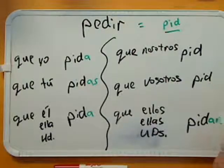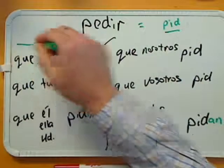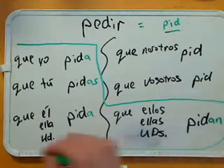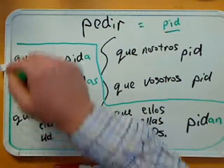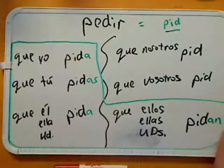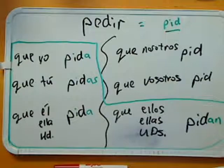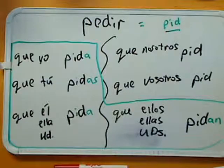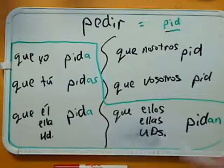If you encase those four forms, it does look like a boot — there's your boot. This is a boot verb in the present tense of the indicative. A slipper in the preterite is only the bottom row. In the subjunctive, the present tense subjunctive is still a boot.